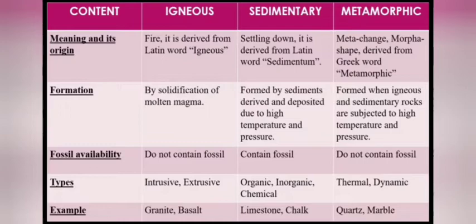First: igneous rocks. The word igneous means fire and is derived from the Latin word 'ignis.' Formation is through solidification of molten magma. Igneous rocks do not contain fossils. Types are intrusive and extrusive — meaning the magma can be pierced through inside the crust or can come out on the surface. Examples are granite, basalt, and sandstone.